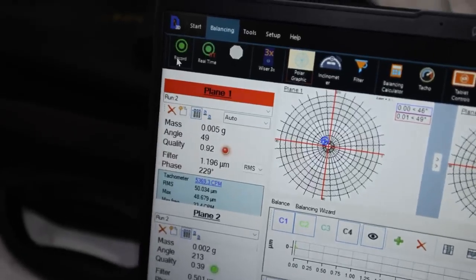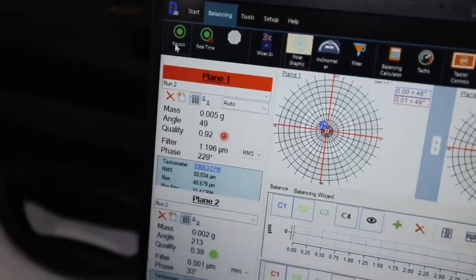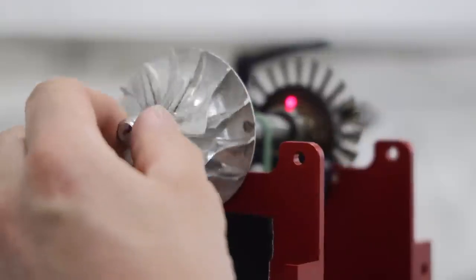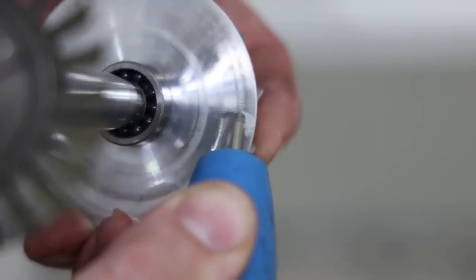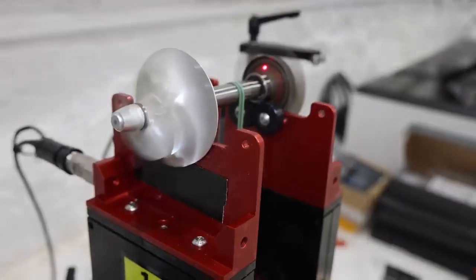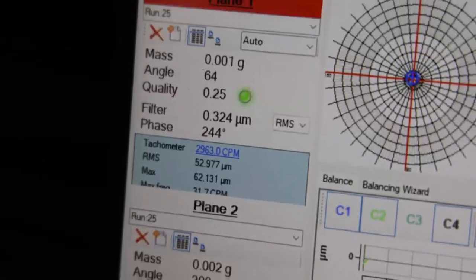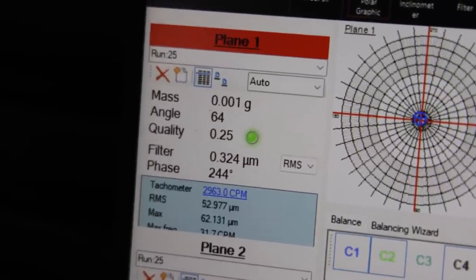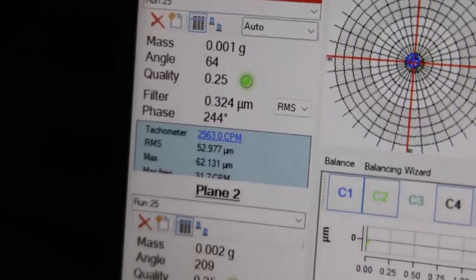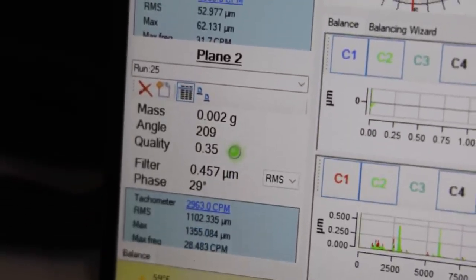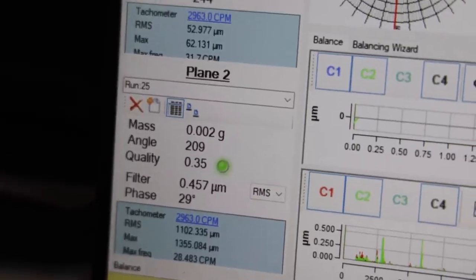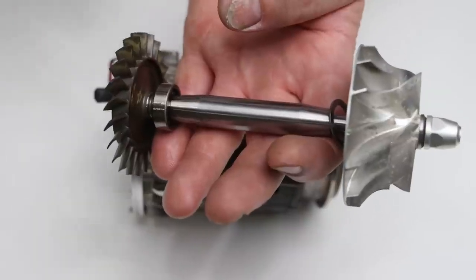Looks like we're about 0.005 grams out of balance. I got it almost perfect - it's off balance by one thousandth of a gram on plane one and two thousandths of a gram on plane two. That's good enough for me, let's move on.